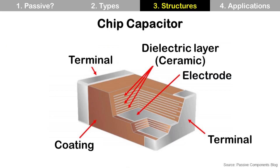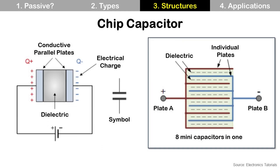Here is the structure of chip capacitor. Dielectric layers and electrodes are two key elements which make a capacitor. Other elements are terminals and coating for protection. At the left is the structure of a parallel plate capacitor, and at the right is the structure of a chip capacitor. Chip capacitor has the same structure as a parallel plate capacitor, and the difference is that chip capacitor stacks dielectric and conductive layers.